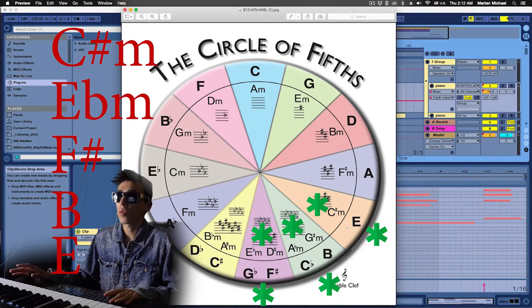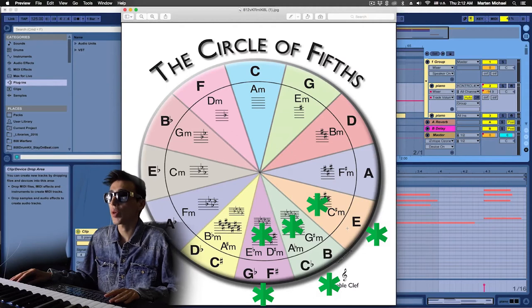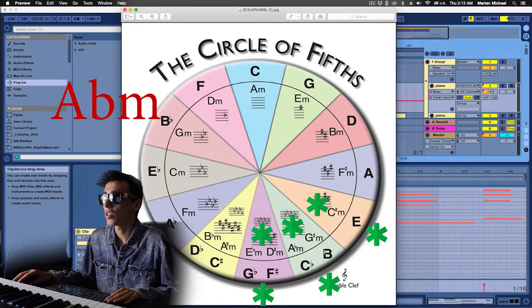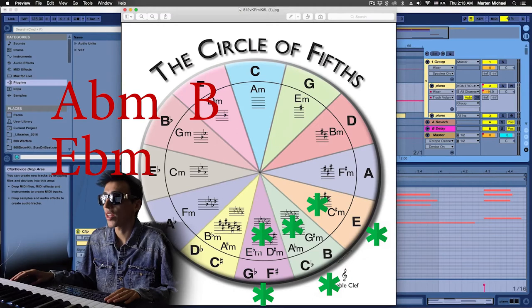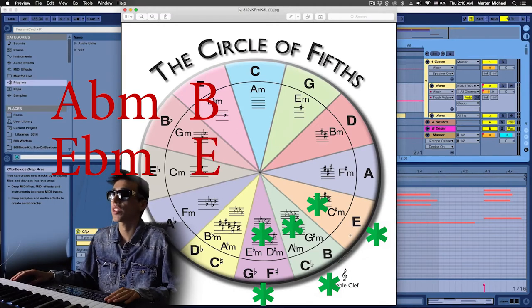So now that we know all the chords that are going to work in Ab minor, we're going to pick the chords and play them out and hear how they sound. So I'm going to go from Ab minor to B major to Eb minor and then end at E major. So let's go ahead and hear how that sounds.